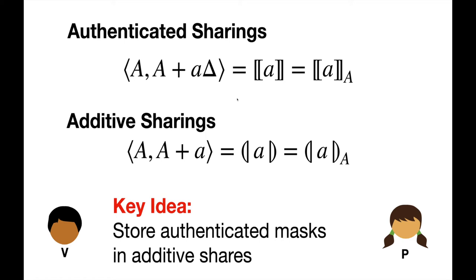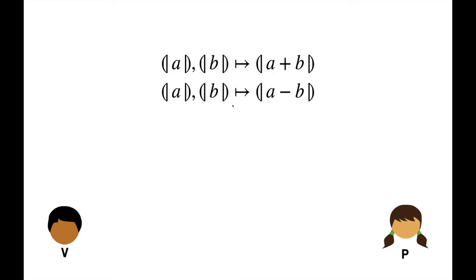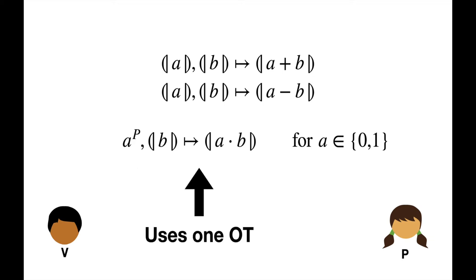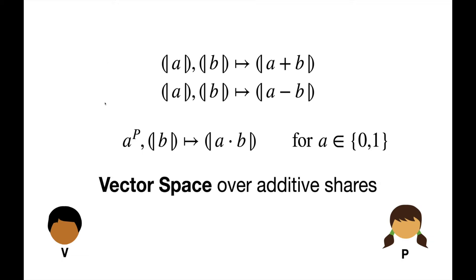Very shortly, we will use the ability to operate on additive sharings to express permutations. Since these new sharings are additive, they trivially support homomorphic addition and subtraction operations. To this list, we will add one further operation. This operation allows P to scale a shared field element B by some bit A of her choice. I won't describe the procedure for this operation in detail here, but it can be easily implemented by a single oblivious transfer.